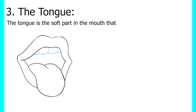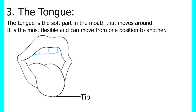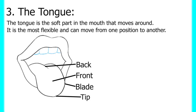The tongue is the soft part of the mouth that moves around. It is the most flexible organ and can move from one position to another. It is the most important articulator in English and is used to produce a wide range of sounds. The tongue is divided into four parts: the tip of the tongue, the blade of the tongue (also known as the edges), the front of the tongue, and the back of the tongue.